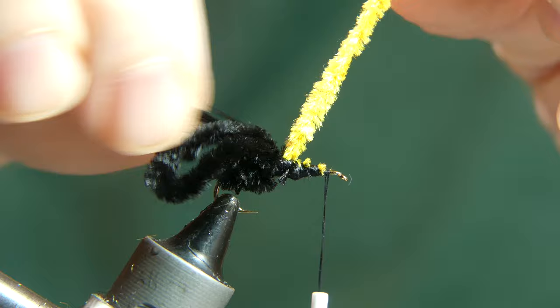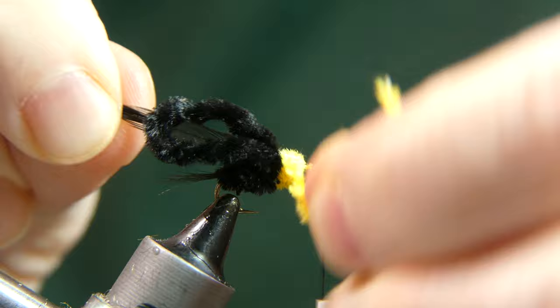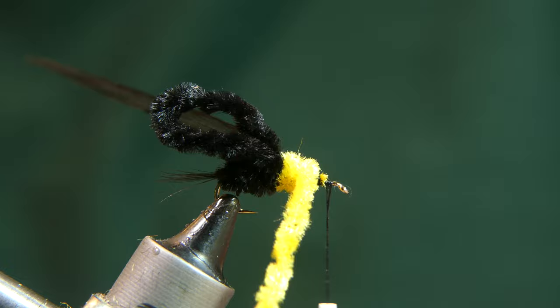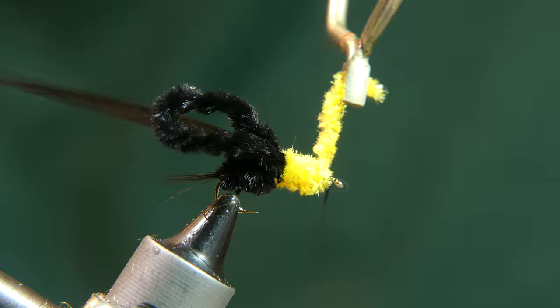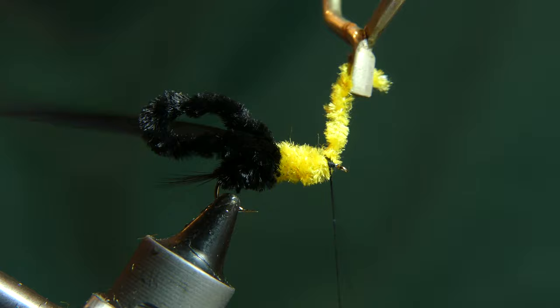Once you have the gold chenille tied in, go ahead and wrap it forward to about one eye length behind the eye. You do not want to crowd the eye. Tie it off with a few wraps and cut away the excess.